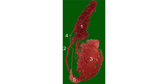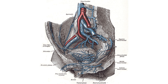Each crosses obliquely over the ureter and the lower part of the external iliac artery to reach the abdominal inguinal ring, through which it passes, and accompanies the other constituents of the spermatic cord along the inguinal canal to the scrotum, where it becomes tortuous and divides into several branches.